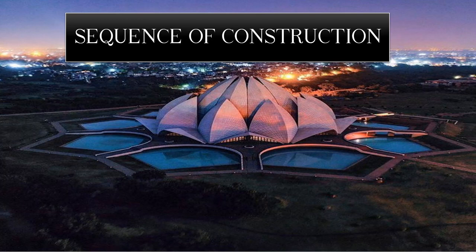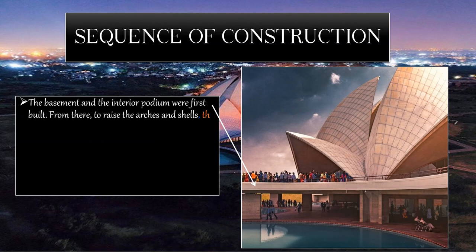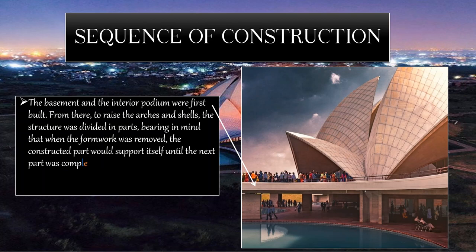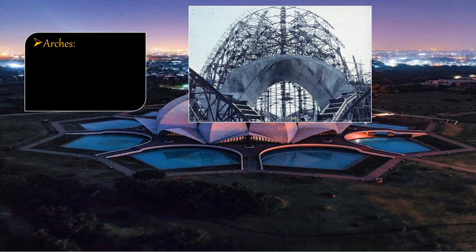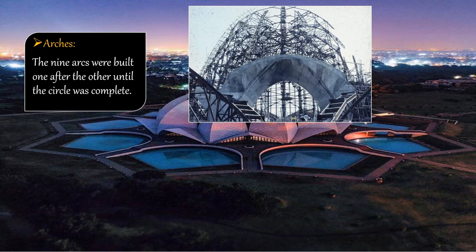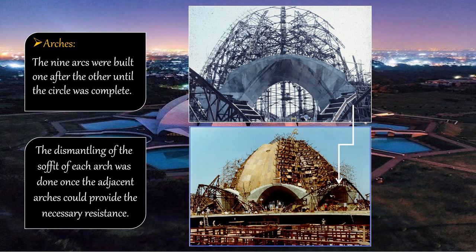Moving to the sequence of construction — for a huge, complex structure there must be a plan; one cannot randomly fix the structure. The basement and interior podium were built first. From there, to raise the arches and shells, the structure was divided into parts — when formwork was removed, the constructed part would support itself until the next part was complete. Since the arches take the entire load, they had to be built first. The nine arches were built one after the other until the circle was complete. The dismantling of the soffit of each arch was done once the adjacent arches could provide the necessary resistance.